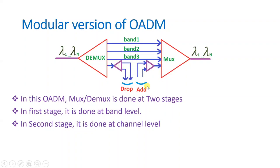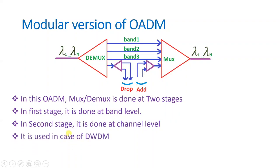Channels are dropped and added after the second stage. This modular version of OADM is used in DWDM networks — Dense Wavelength Division Multiplexing — where the network is very dense in terms of wavelength, meaning wavelengths are separated by very small distances and are very close to each other. For higher network capacity we should use the modular version of OADM.